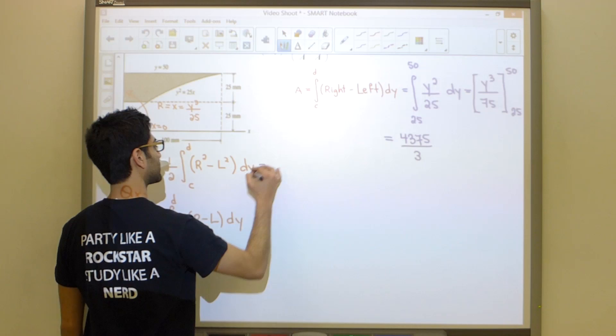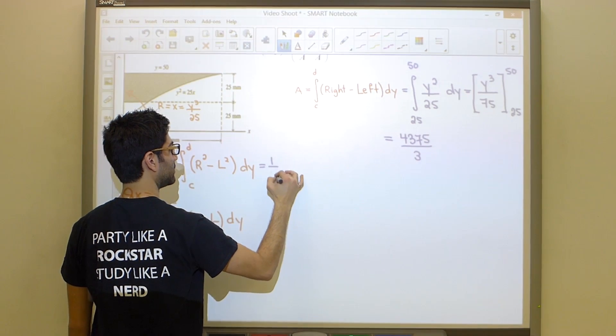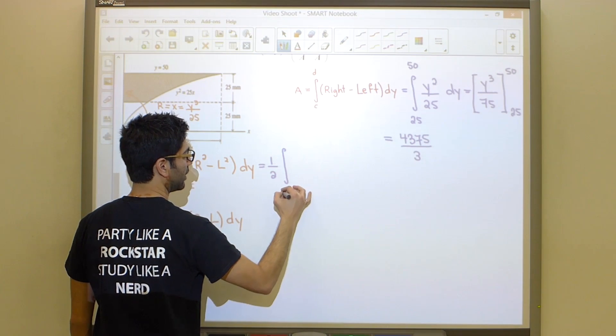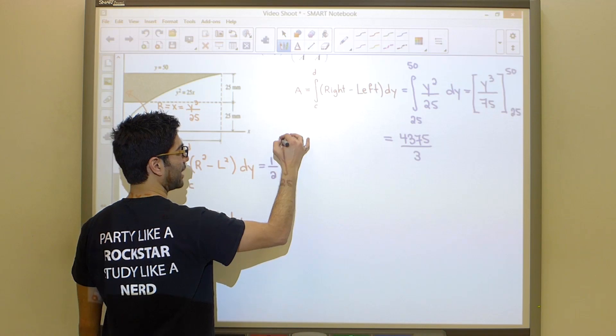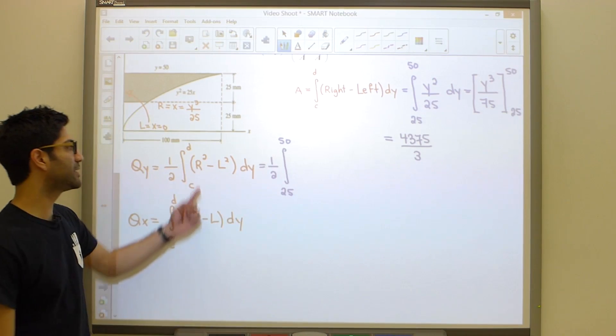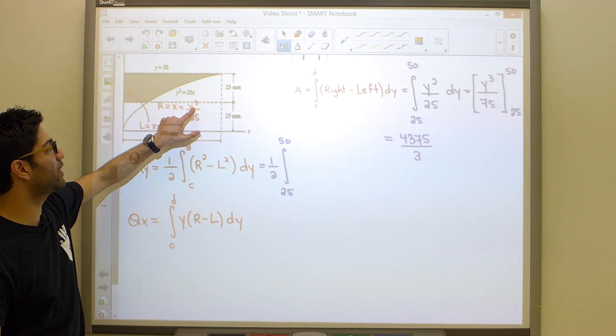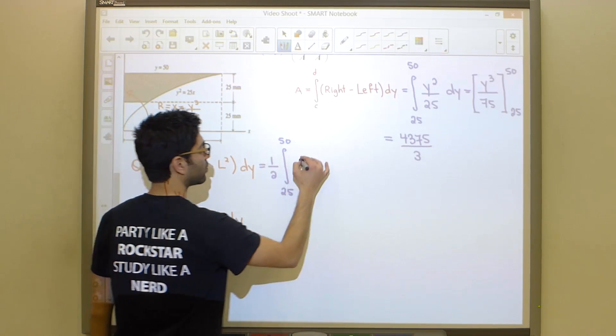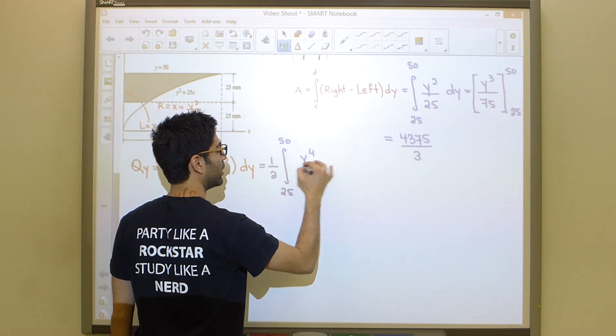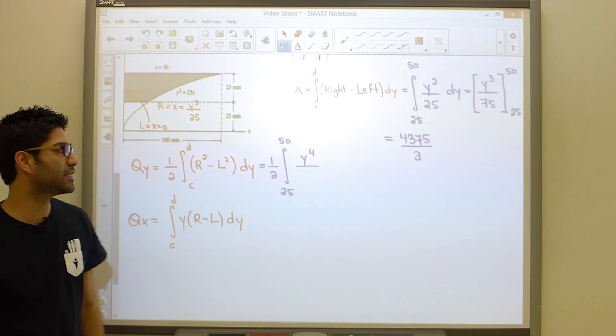So it's going to be one half the integral from 25 to 50. The bounds will not change. And it's simply the right squared. So we're going to have to square this value. So y squared squared becomes y to the four. 25 squared is 625.